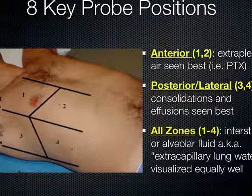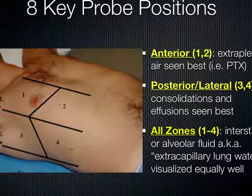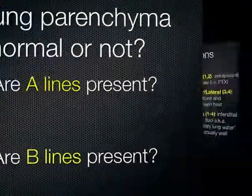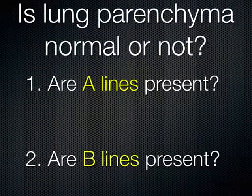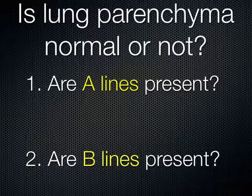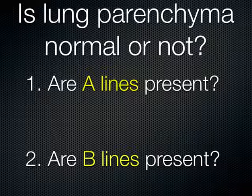In all zones we should be able to see extravascular lung water equally well. For instance, if a patient has pulmonary edema, this should be diffuse. Going back to the two fundamental questions: is the lung parenchyma normal or not? The underlying questions are: are A lines present, and are B lines present? It is the evaluation of these artifacts — created by interfaces with different acoustical impedances — that gives you clues to the underlying lung pathology.